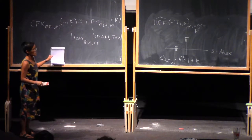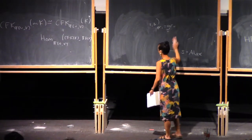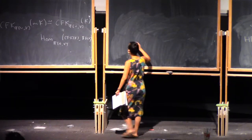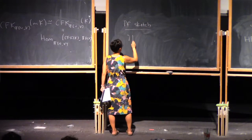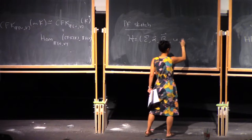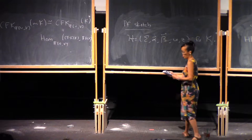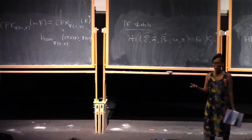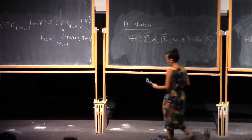And then the gradings do what the gradings do. So let's sketch the proof of this. Suppose that H is a Heegaard diagram for K.